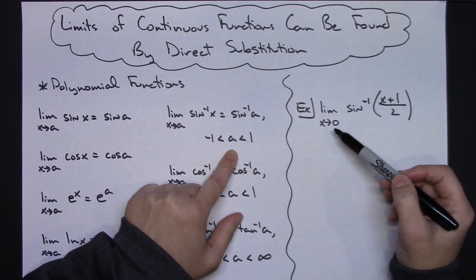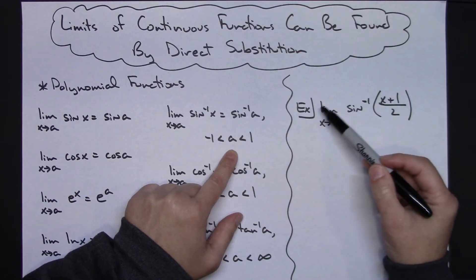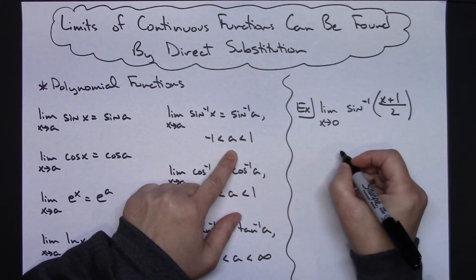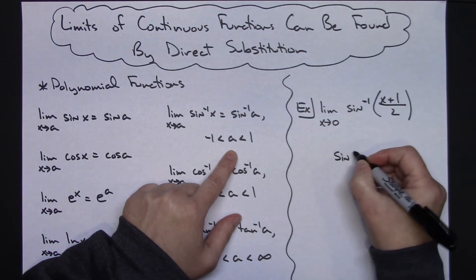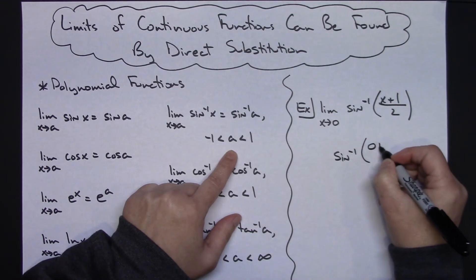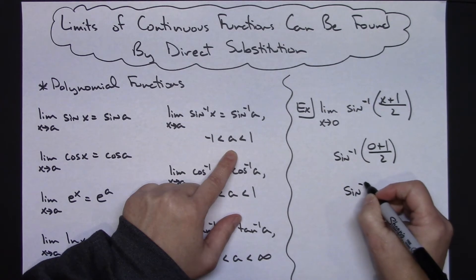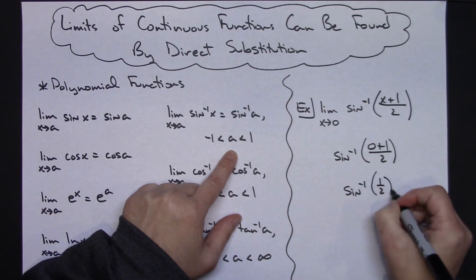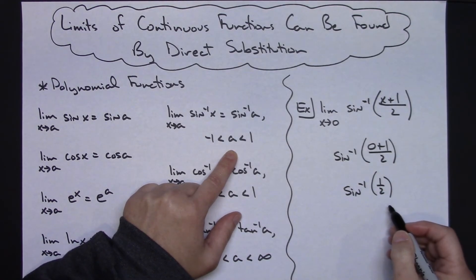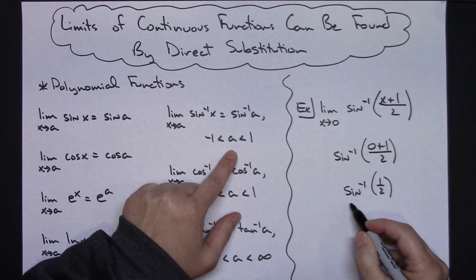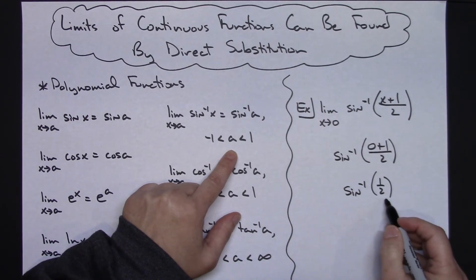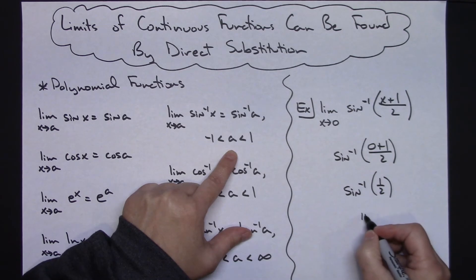When showing your work, as soon as you do that direct substitution, this limit notation goes away. So then I'm going to have the inverse sine of zero plus one over two, which is the inverse sine of one half. And hopefully you were really good with your trig, and you can just have this one memorized: the inverse sine of one half is pi over six.